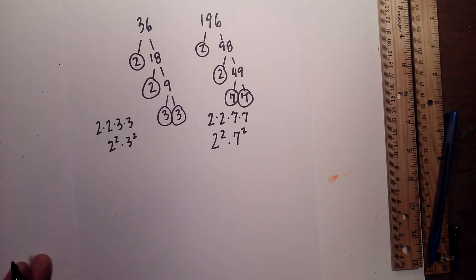So there we go. The prime factorization of 36 and 196. Thanks for watching and Moo Moo Math uploads a new math and science video every day. Please subscribe and share.